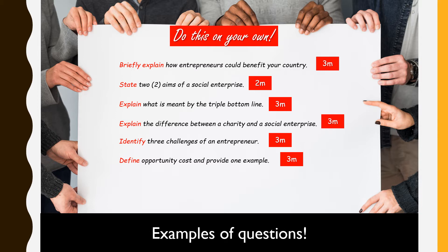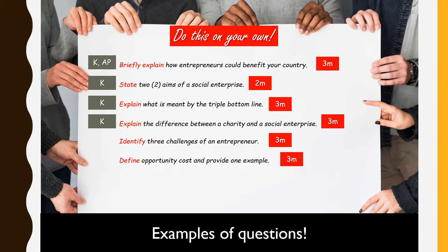There are six questions. Which ones require both knowledge and application, and which require just knowledge? Knowledge and application for the first question, knowledge for the second, knowledge for the third, knowledge for the fourth, knowledge for the fifth, and knowledge and application for the last question. The knowledge-only questions — for example, 'state two aims of a social enterprise' for two marks — is basically just listing the obvious. What are the two aims? It could be environmental, economic, profit-oriented and things like that.